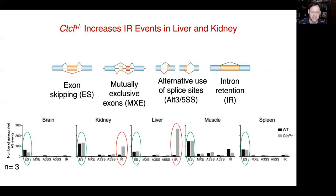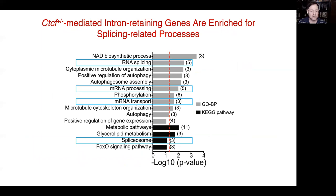Asking what genes were affected by this intron retention in kidney and liver, the gene ontology and KEGG pathway analysis showed enrichment for RNA splicing and processing and spliceosomal genes, suggesting that intron retention was implicated through these mechanisms.